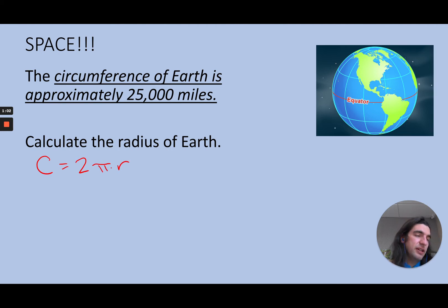Okay, so what I have is that the circumference of the Earth is 25,000 miles. I know the equation circumference equals 2πr, so I'm just going to work backwards to find the radius.